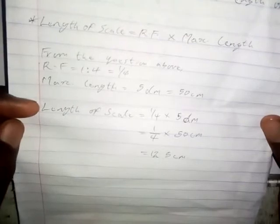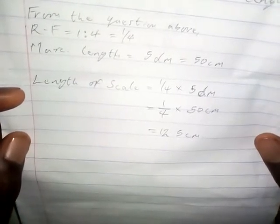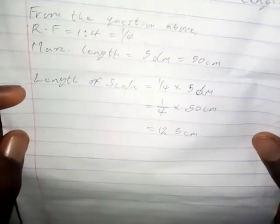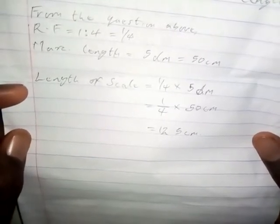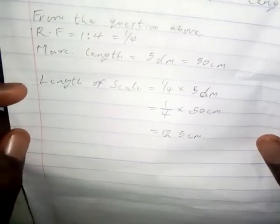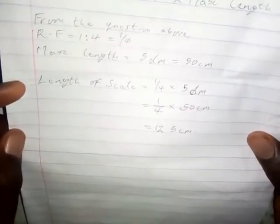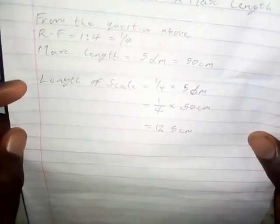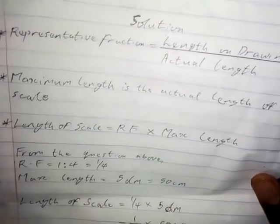Now we calculate the length of scale: length of scale equals 1/4 times 50 centimeters, which gives 12.5 centimeters. This 12.5 centimeters is the length we will use to construct the plane scale. Note that 12.5 centimeters represents 5 decimeters — 12.5 cm is the length on drawing and 5 decimeters is the actual length.